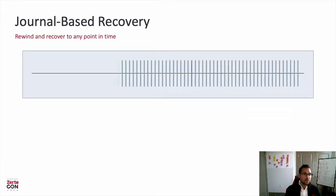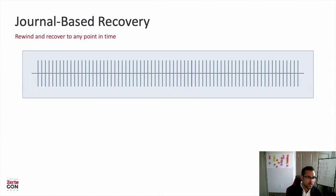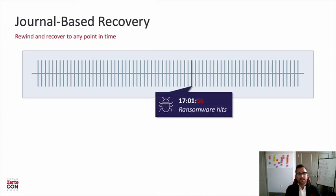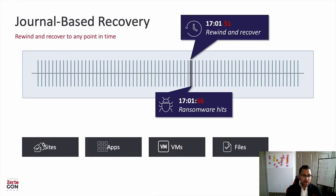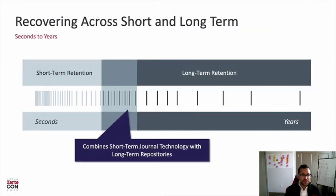Think of the journal as a TiVo. It allows you to go back to those checkpoints we talked about — whether it was five seconds ago, ten seconds ago, or five days ago. With the Zerto journal, you're able to simply rewind and recover. Take an incident like ransomware where it hits you at a specific point in time — with Zerto, you can simply rewind and recover back to just before it happened. You can recover entire sites, entire applications, virtual machines, and even single files. Zerto allows you to recover not just in the short term — zero to 30 day scenarios — but also long term by unlocking secondary storage.